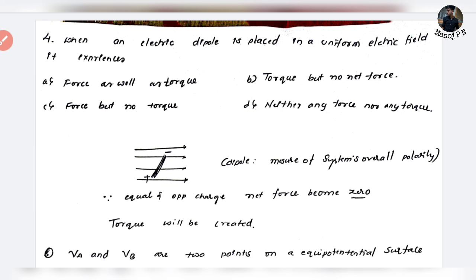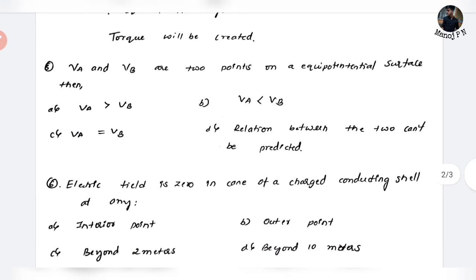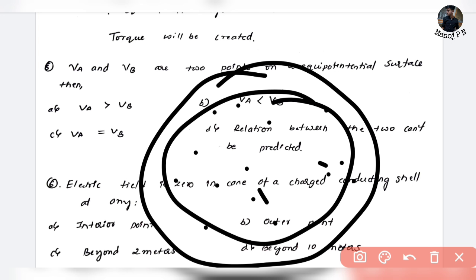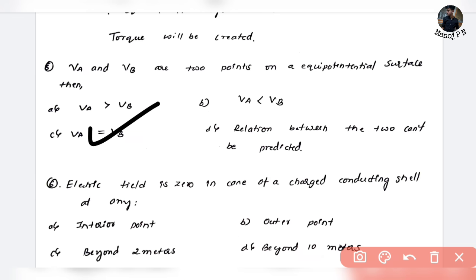Next question: Va and Vb are two points on an equipotential surface. What is an equipotential surface? It is a surface where the potential is the same at every point. So of course Va should be equal to Vb — common sense. That will be your answer.